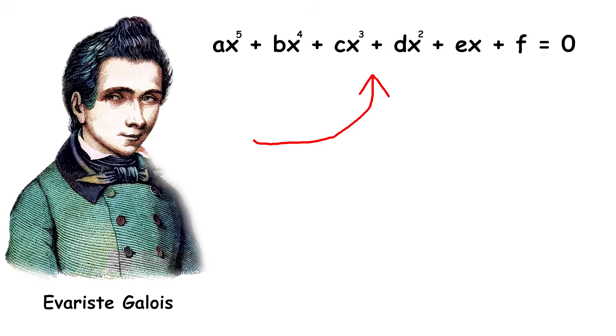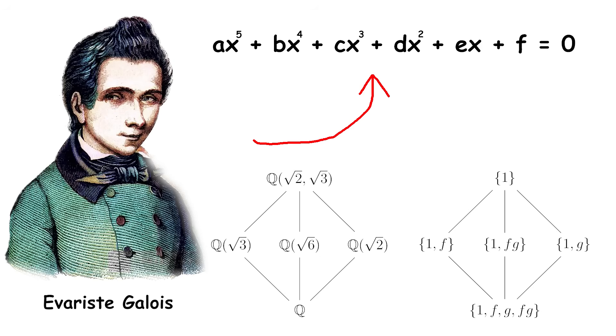Galois developed an entire mathematical theory now called Galois theory, that explains the conditions under which a polynomial equation can be solved by radicals. That is, solved using a compact formula. He showed that this is possible for polynomials up to degree 4, but not for higher degrees. Galois' work was not fully appreciated until after his early death at age 20. However, his ideas laid the foundation for a deep understanding of the limitations in solving higher degree polynomial equations.